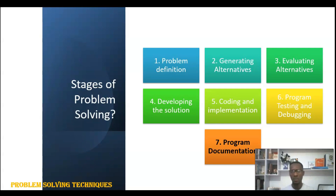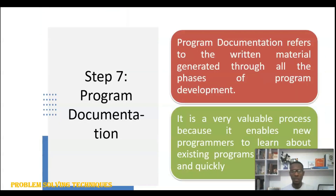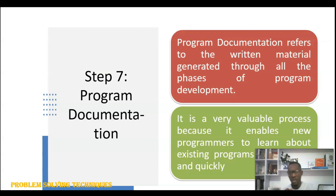The final stage of problem solving is program documentation. Program documentation refers to the written materials detailing the steps we took to solve our problem across all the stages. It is very important because it enables new programmers to learn about existing problems much more easily and quickly. For example, you have a template of what has been done in the past — it helps you know what was done and how it was carried out, so that if you want to improve on the existing solution you know where to start. Without documentation of previous processes, it becomes difficult for new programmers to know where to begin.